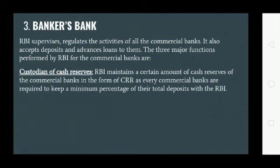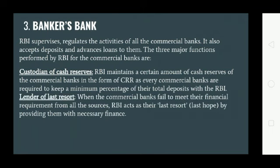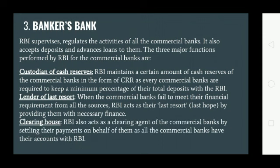The three major functions performed by the RBI for commercial banks are: first, custodian of cash reserves; second, lender of last resort; and third, clearing house. As custodian of cash reserves, RBI maintains a certain amount of cash reserves of the commercial banks in the form of CRR, as every commercial bank is required to keep a minimum percentage of their total deposits with the RBI.